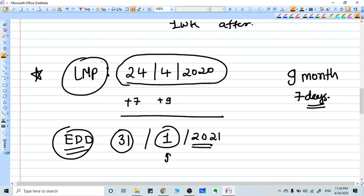And in the date we are going to add seven days: 25, 26, 27, 28, 29, 30, 31, and then 1 of 2021. This means 31st January will be the EDD of the patient which has the LMP of 24th of April.